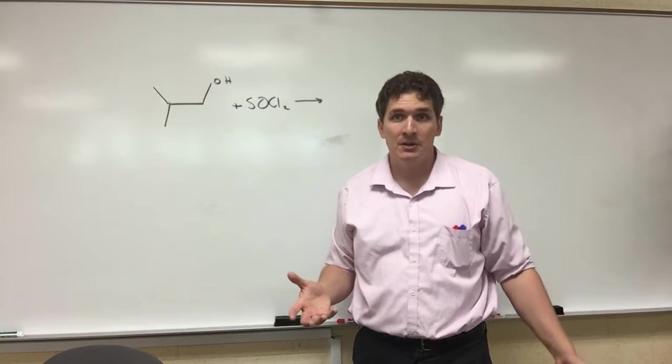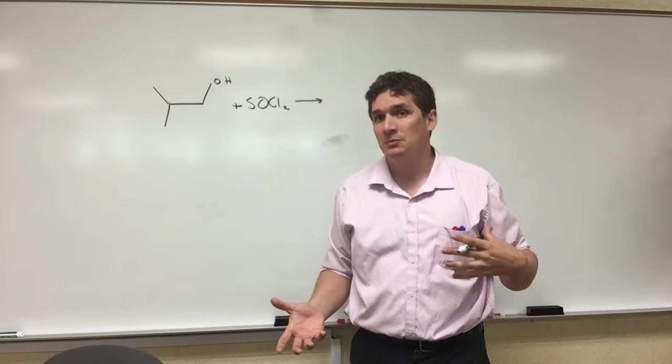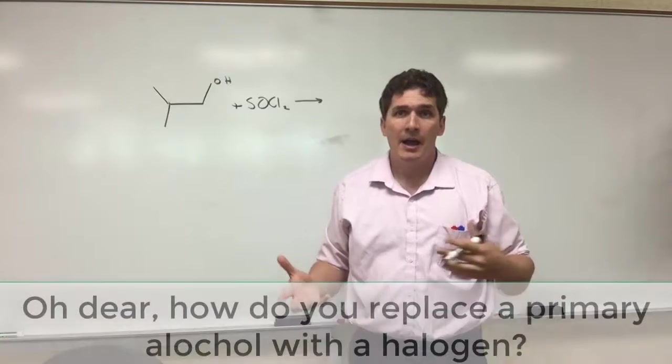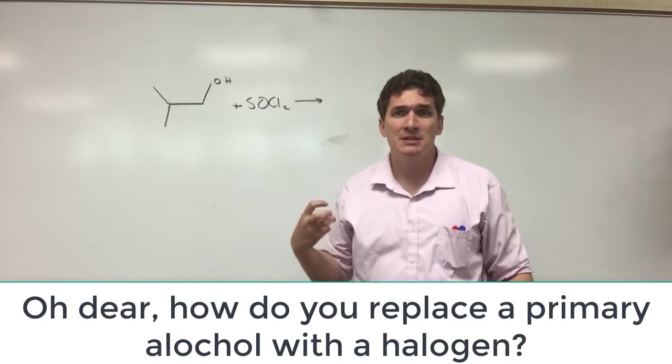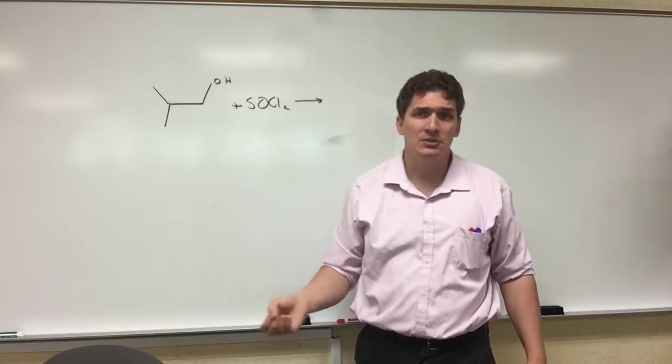Now let's say you are working with an alcohol and you want to get rid of that alcohol and replace it with a halogen. How do you replace the halogen, particularly if this is a primary alcohol sitting on a CH2 group?